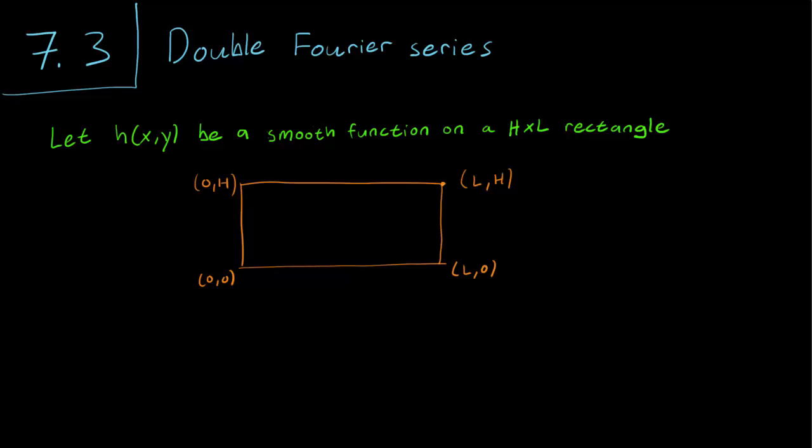And we want to write down a Fourier series for this two variable function, and this is what it's going to look like. Here alpha_mn is the Fourier coefficient, a constant, and we are summing twice from sine n pi x over L from n equals 1 to infinity, and sine m pi y over H from m equals 1 to infinity.